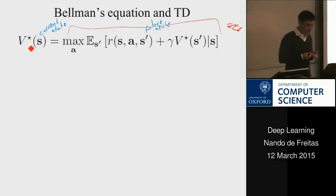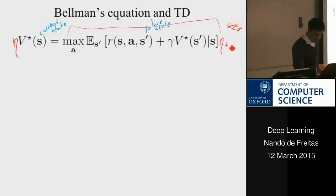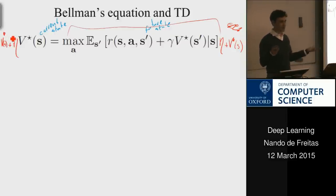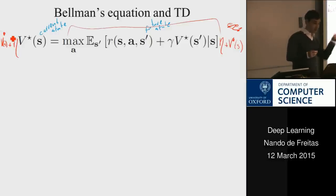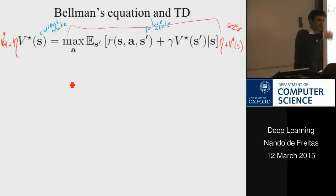Here's one way to do it. Take the Bellman equation, multiply both sides by a learning rate eta, then add V(s) to both sides — the same trick used to derive SGD from the true gradient. In SGD the true gradient involved an expectation over all the data; instead SGD loads one data point at a time. Here we do the same thing: we only load one state at a time. We move in the world, observe a new state, update our parameters, move again, observe, update — very much like SGD.